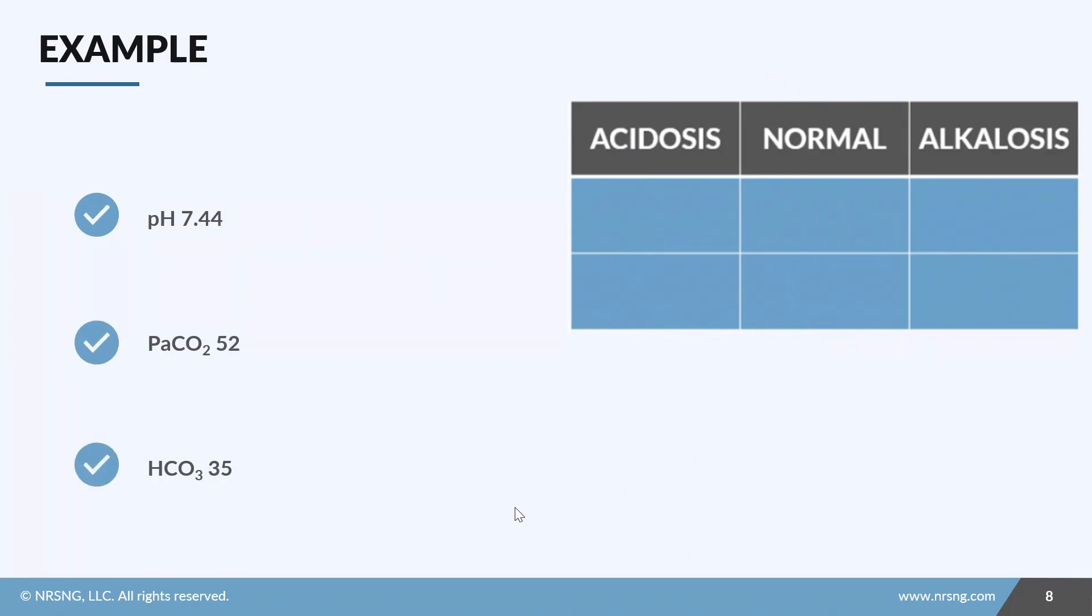Okay, let's look at our last one. You can probably guess what this one's going to be because we've done it a few times already. Step one: pH of 7.44, that is normal. CO2 of 52, that is acidosis. And a bicarb of 35 is alkalosis. Now this is the one time I'm going to skip to step three because I want you to see our trick.